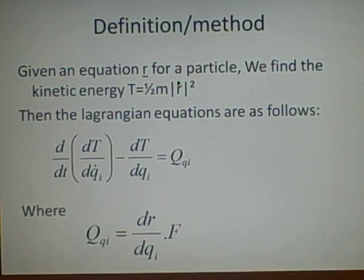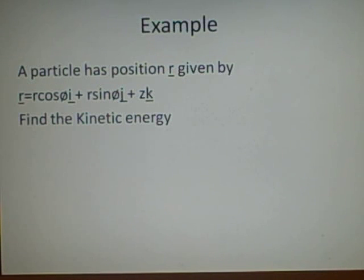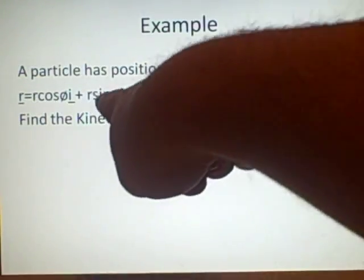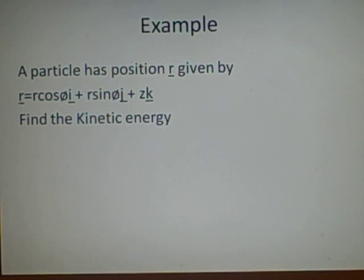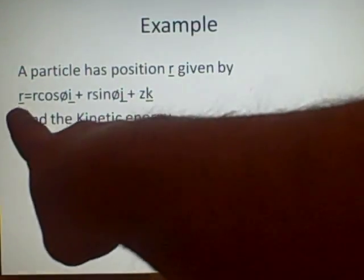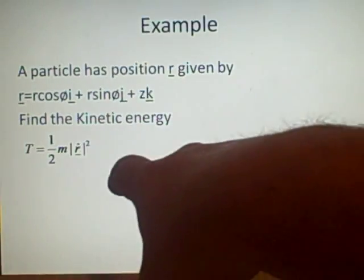The external force f will usually be something like gravity, so f will usually be like minus g times the k. Now we've got an example: a particle has position R given by R equals r cosine theta i plus r sine theta j plus z k, and we're asked to find the kinetic energy. Remember the equation is T equals a half m r-dot squared, so we need to work out r-dot.